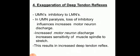Third, deep tendon reflexes are exaggerated in UMN paralysis. Upper motor neurons are normally inhibitory to the lower motor neurons. In UMN paralysis, loss of these inhibitory influences increases motor neuron discharge. Specifically, there is increased gamma motor neuron discharge, which increases the sensitivity of the muscle spindle to stretch. This results in exaggerated deep tendon reflexes.